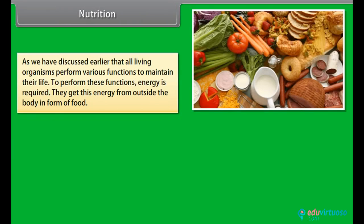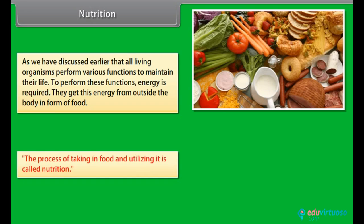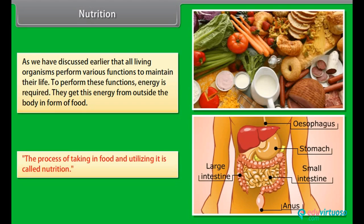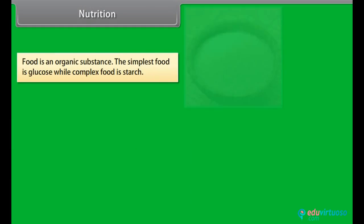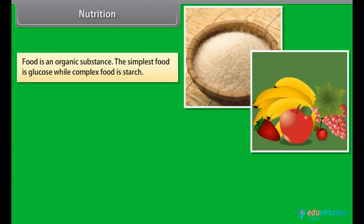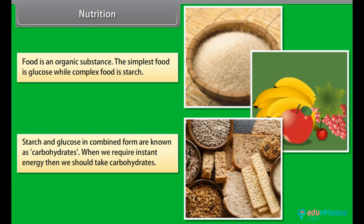All living organisms perform various functions to maintain their life, and energy is required to perform these functions. They get this energy from outside the body in the form of food. The process of taking in food and utilizing it is called nutrition. Food is an organic substance. The simplest food is glucose, while complex food is starch.